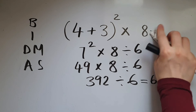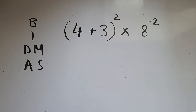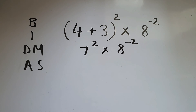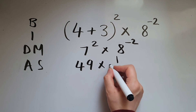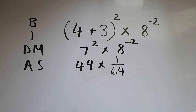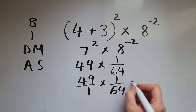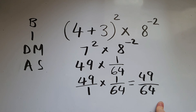And if we had this, we do brackets first — 7 squared times 8 to the power of negative 2. Powers come next, so we're going to do 49 times 1 over 64. Now we'll multiply these two — you can use a calculator, or you could go 49 over 1 times 1 over 64. 49 times 1 gives us 49, 1 times 64 gives us 64. That is 49 sixty-fourths as a fraction. If you want to convert it to a decimal, then you do 49 divided by 64.